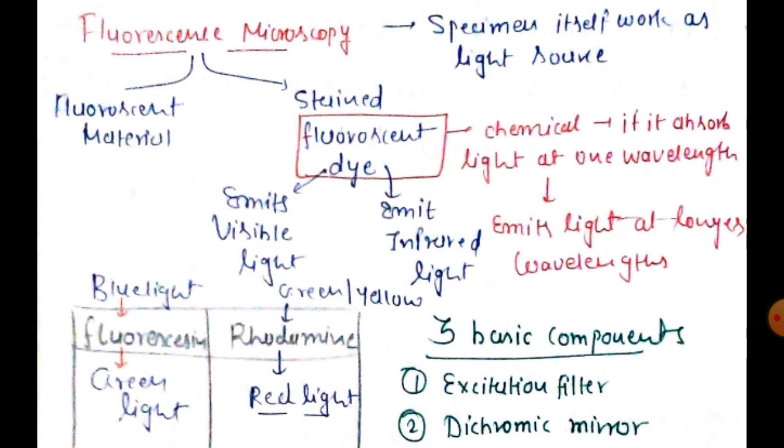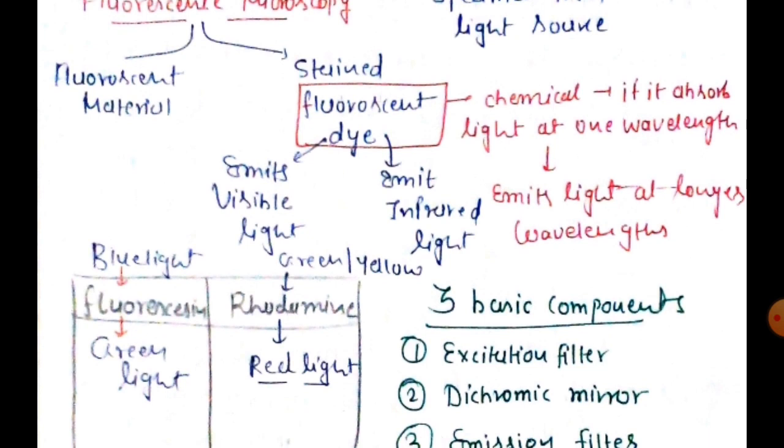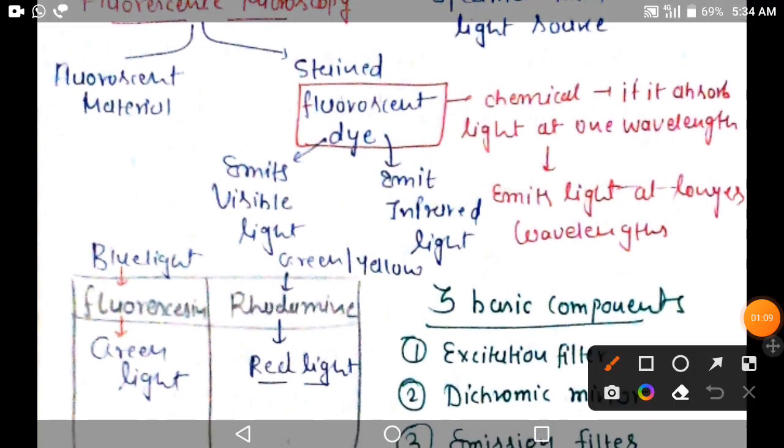Whenever the specimen itself works as a light source, when the specimen emits light as a fluorescent source, we use fluorescent microscopy. We use fluorescent material or fluorescent dye to stain the specimen. After the specimen is stained by the fluorescent material, this dye will emit light.